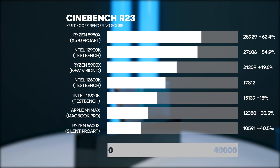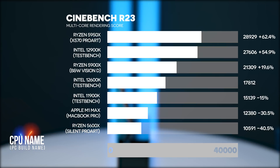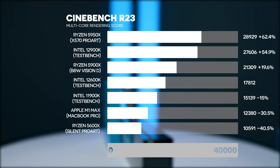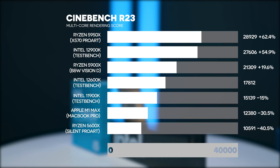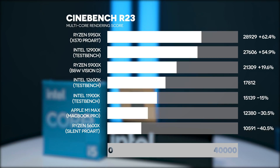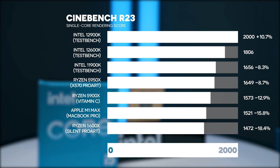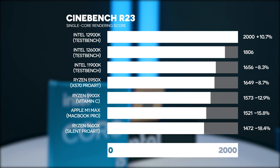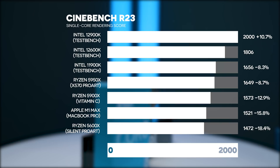In Cinebench R23 multicore, the 5950X is 62.4% better and the 12900K is 54.9% better — though the 12900K is roughly double the price. The Ryzen 5900X is 19.6% faster, while the 11900K is 15% slower. The M1 Max is 30% slower and the Ryzen 5600X is 40.5% slower. In single-core, the 12900K is 10.7% faster; the 11900K is 8.3% slower, the 5950X 8.7% slower, the 5900X 12.9% slower, the M1 Max 15.8% slower, and the 5600X 18.4% slower.